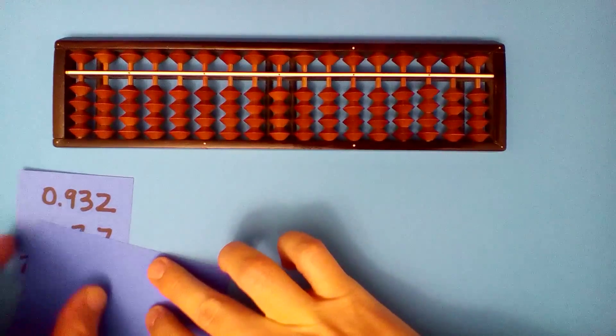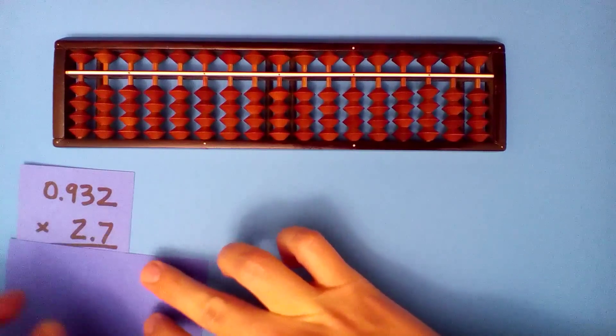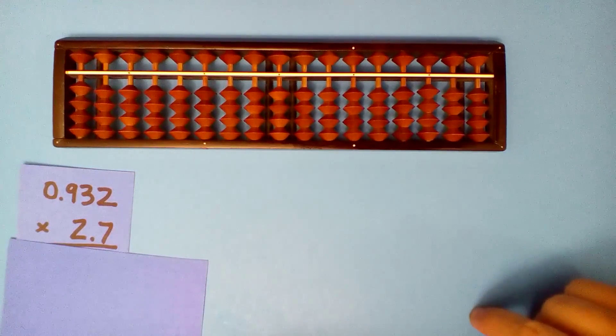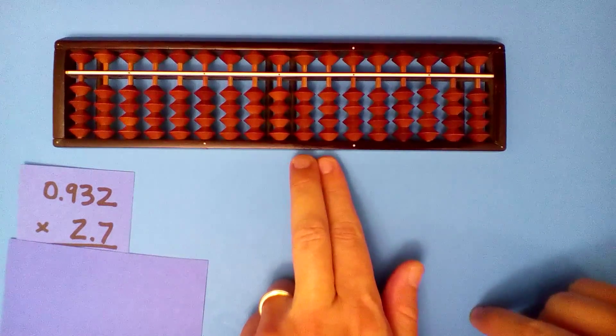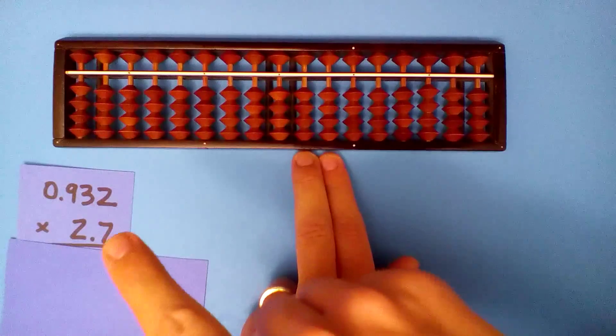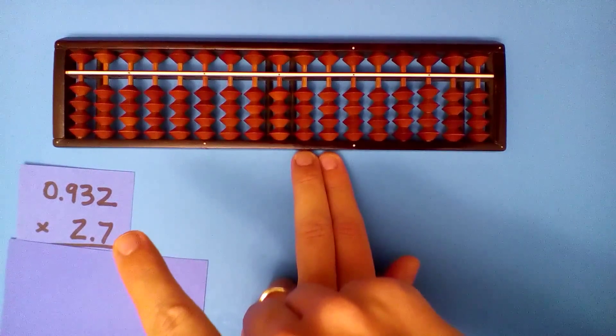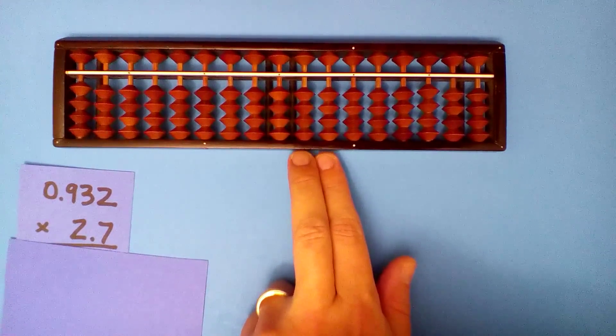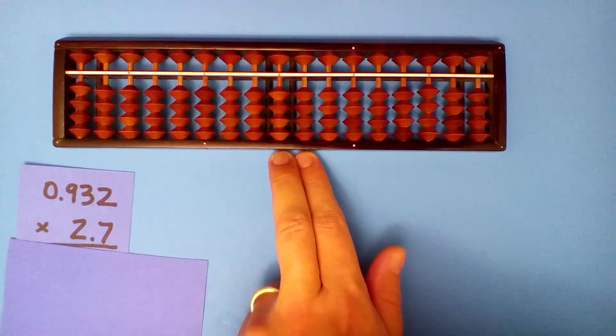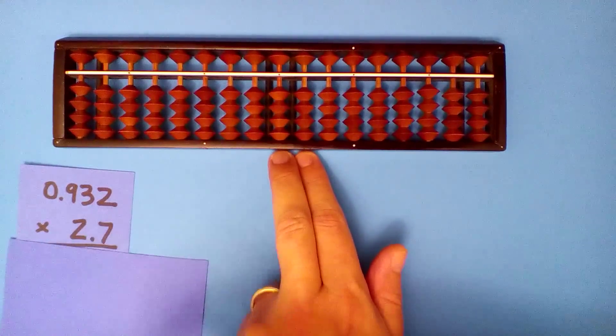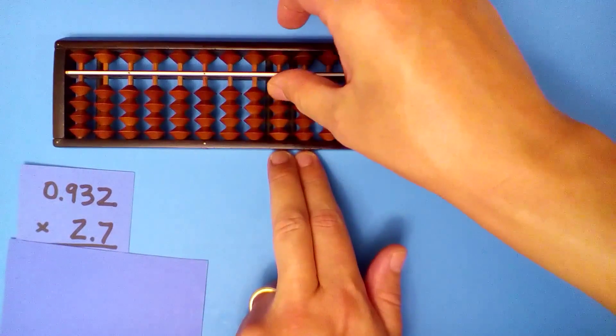What is 0.932 times 2.7? Start on the tenths and hundredths. Zero digits and one digit for a total of one. We go one to the left. We'll use the two first. Two times nine, eighteen.